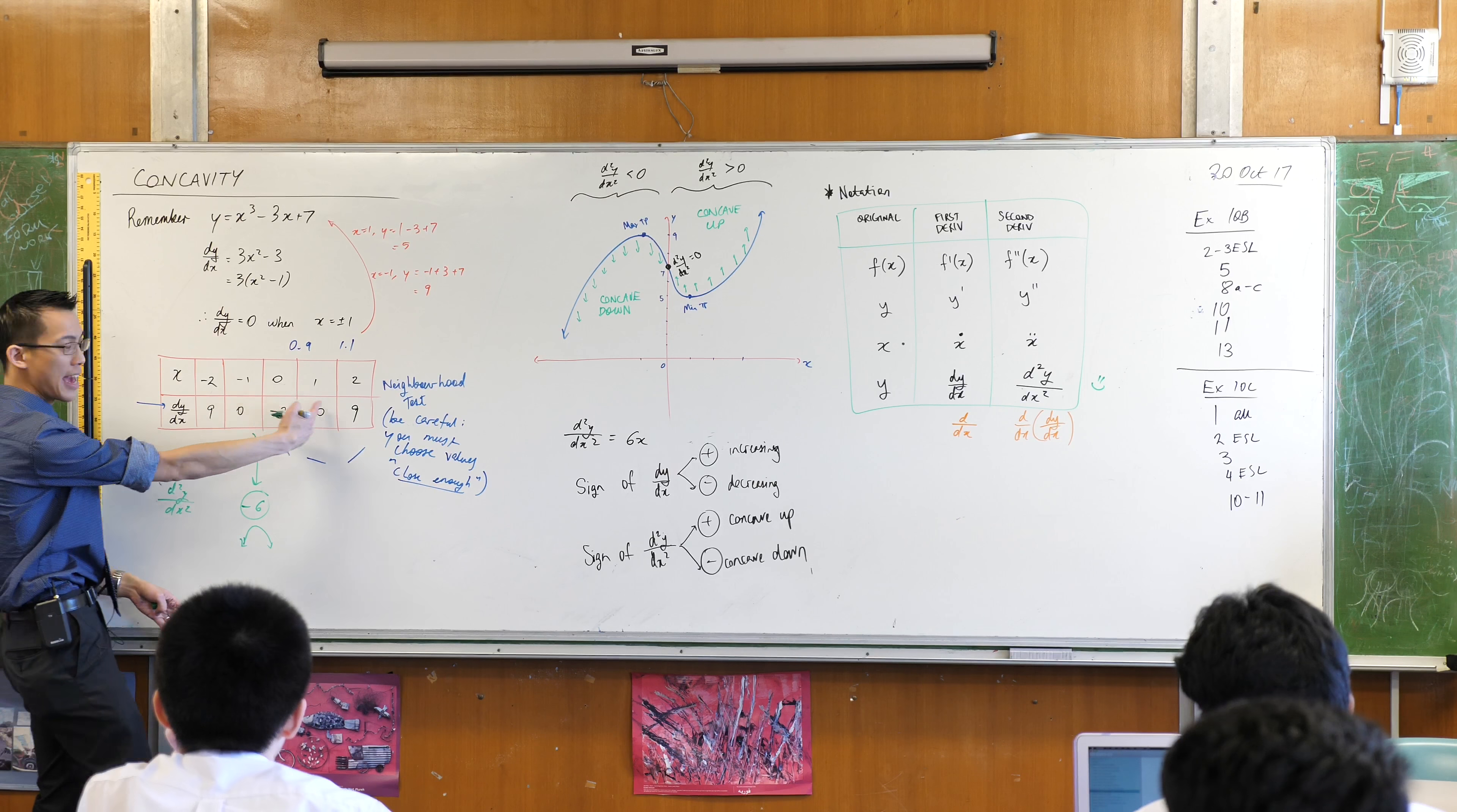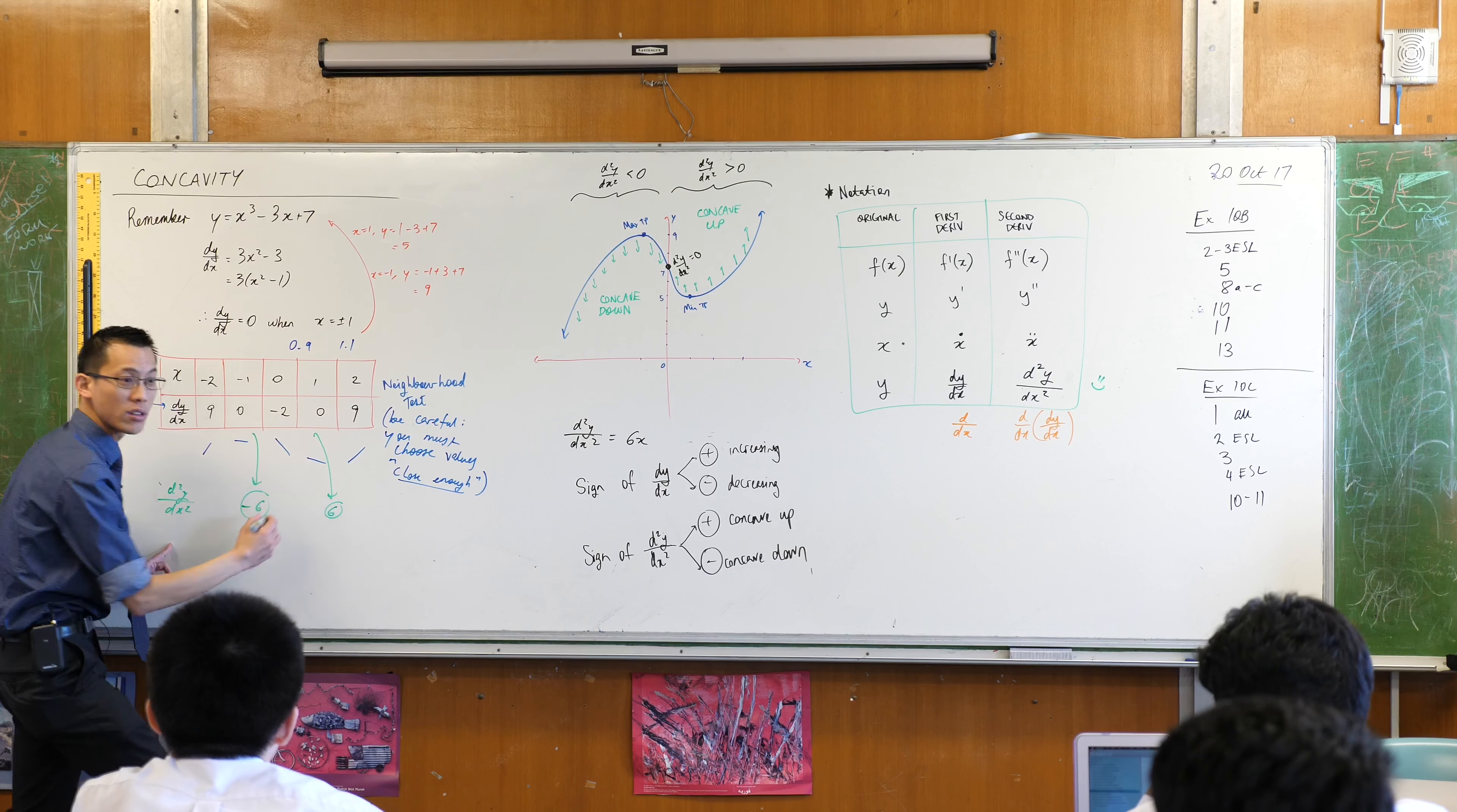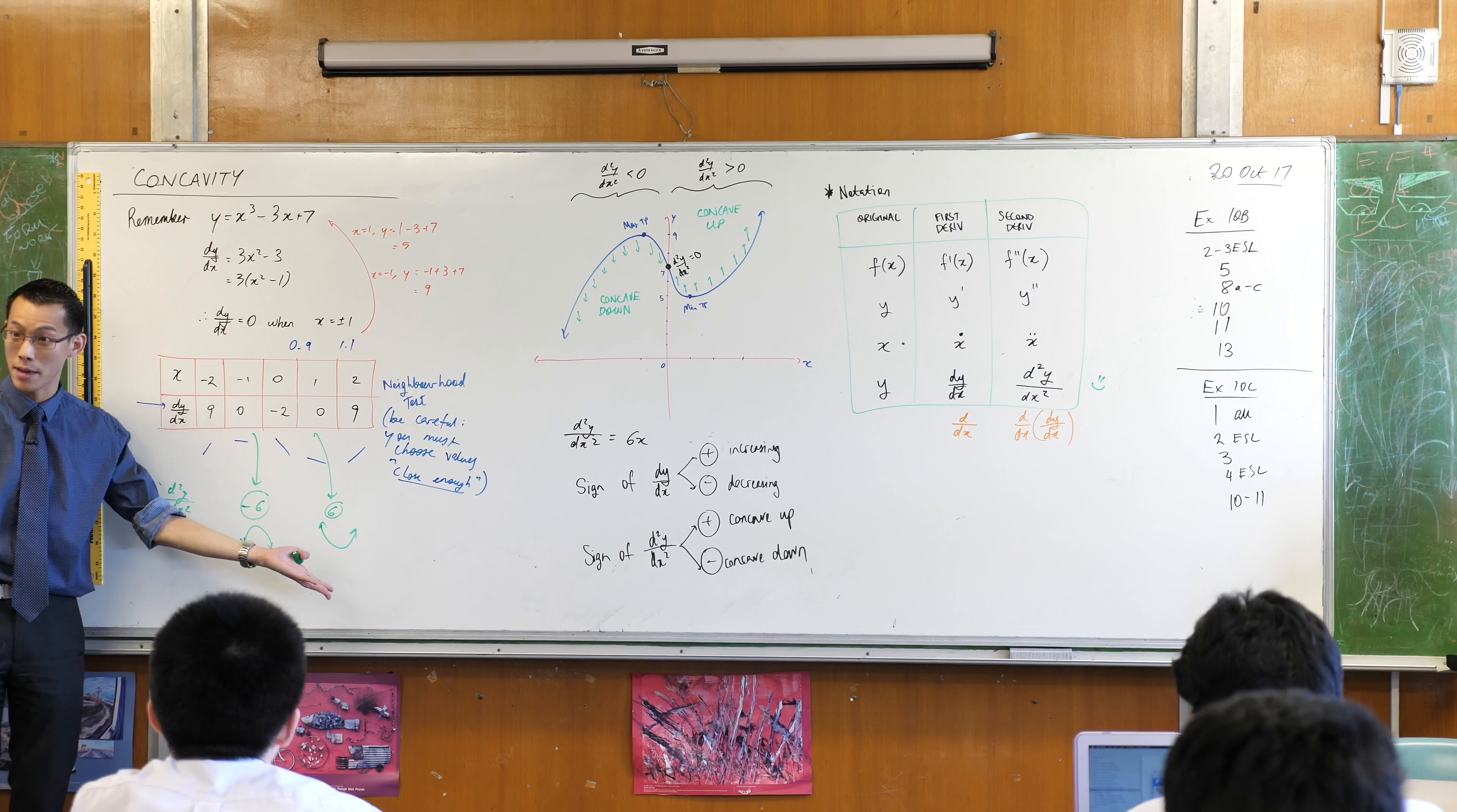Likewise, if I said x equals one, let's put that into the second derivative, what value do you get? Six, which is positive. So that's facing up, it's concave up. So what kind of turning point do you have? Well, it's a minimum.